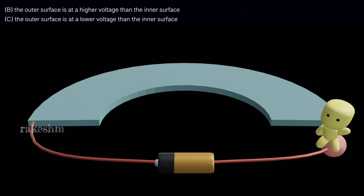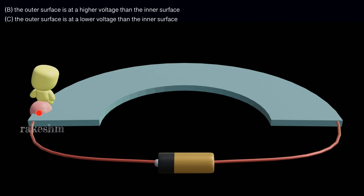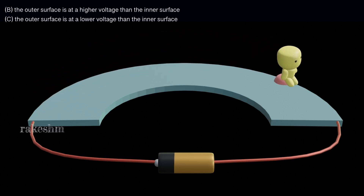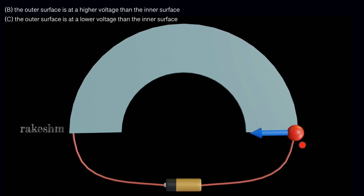Let us move to options B and C. Option B says the outer surface is at a higher voltage than the inner surface; option C says the outer surface is at a lower voltage. The potential difference delta V between inner and outer surfaces is due to the kinetic effects of moving electrons. The movement of electrons is opposite to the direction of current.